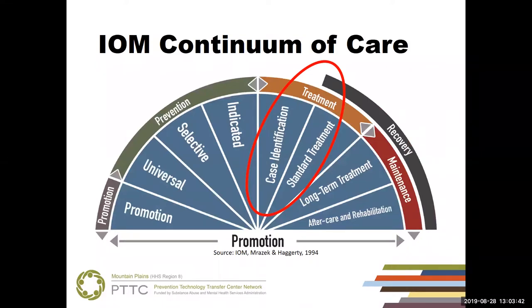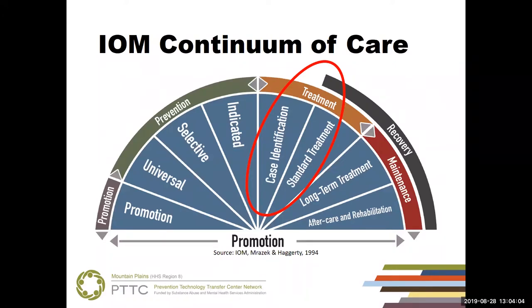Many of you may be familiar with the IOM mental health intervention spectrum model published in 1994 that offers a framework for addressing behavioral health, including substance use disorders. This model begins with promotion, then prevention, treatment, and maintenance recovery across the continuum, while recognizing that promotion also occurs across the entire continuum. Today's webinar will focus on prevention within treatment and recovery. Other webinars in this series will focus on other components of the IOM continuum.